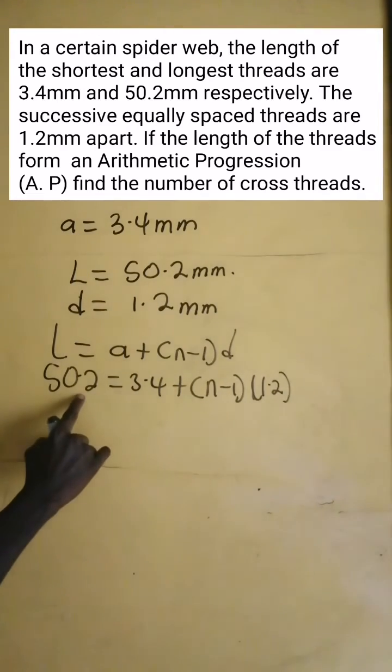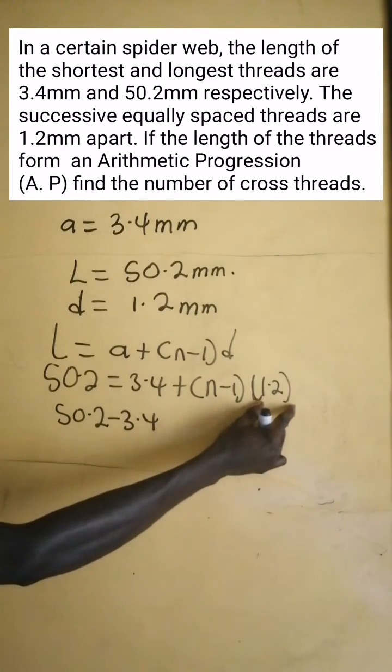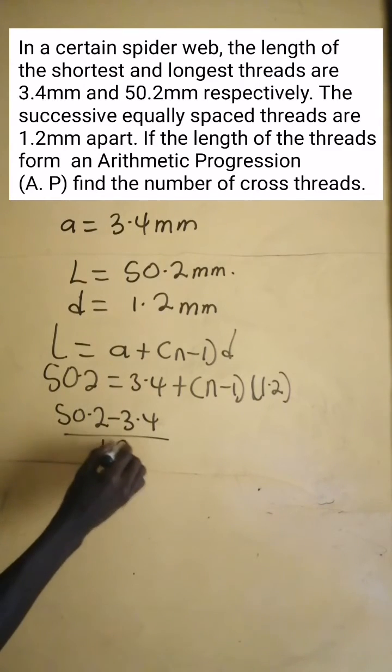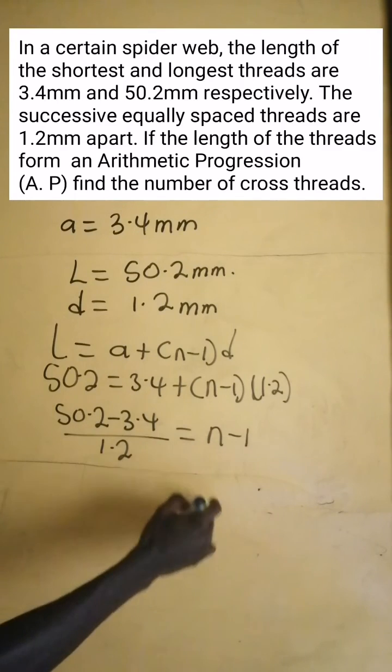So here we take 3.4 from 50.2 and then divide by 1.2. This gives us n minus 1.